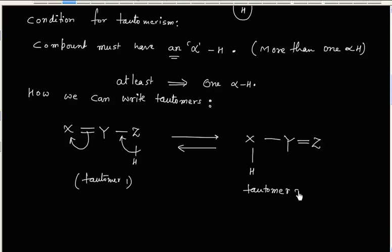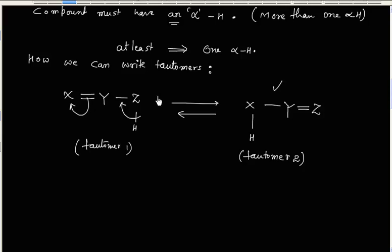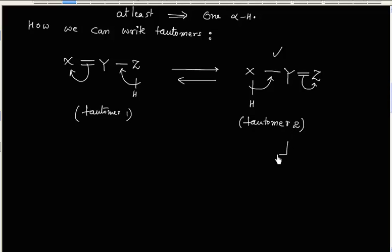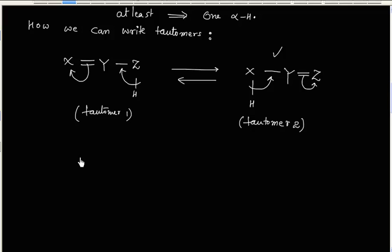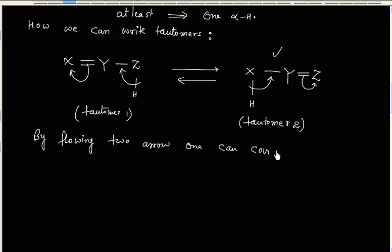One tautomer can be converted into another tautomer by flowing two arrows — one is bond pair to bond pair, and another is bond pair to lone pair, which then finally converts into a bond pair. Similarly, tautomer 2 can be converted back to tautomer 1 by breaking one bond, opening it, and adding hydrogen at the original position. So by pushing two arrows, one can convert one tautomer to another.